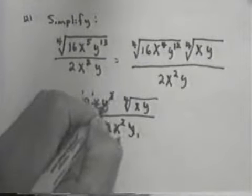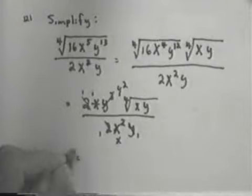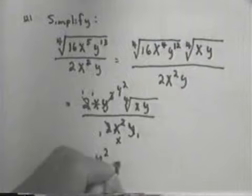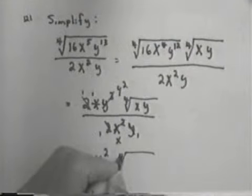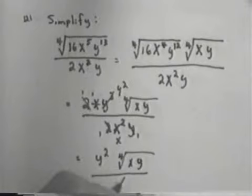and the y cubed and y by y. y goes into y 1, y goes into y cubed, y squared. So that leaves me with 1 times 1, so it would be y squared times the 4th root of xy over x.